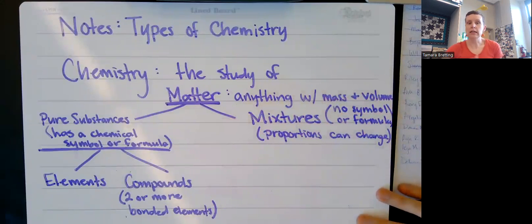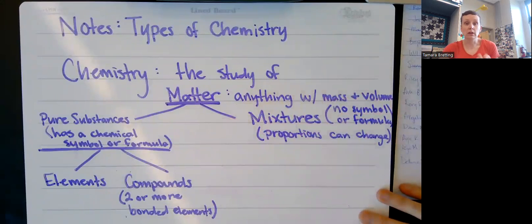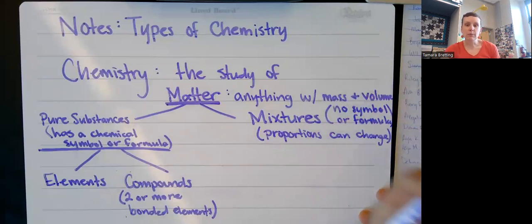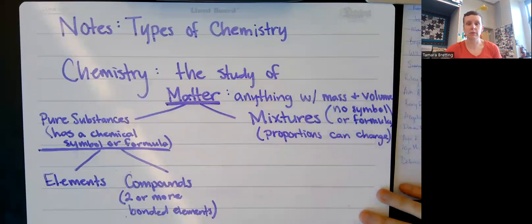For example, a really easy mixture is salt water. You put some salt in water and you've got salt water. But you can put a lot of salt in the water and it's still salt water, or you can put a tiny bit of salt and it's still salt water. So different proportions, still salt water — that's a mixture.